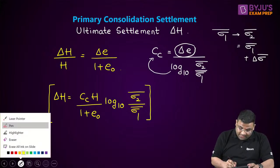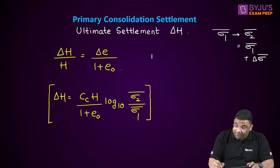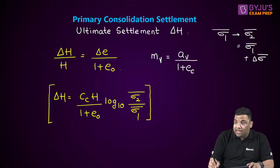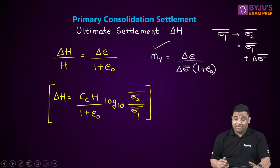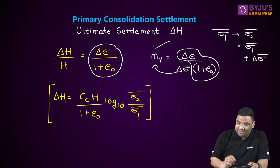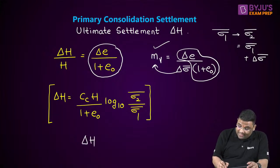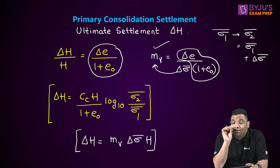The second formula uses Mv in place of CC, where Mv = Av / (1 + E₀), and Av = delta E / delta sigma. Since delta E / (1 + E₀) equals Mv × delta sigma, we get the second equation: delta H = Mv × delta sigma' × H. These two formulas form the basis for finding the ultimate settlement.